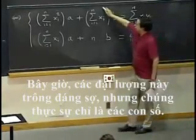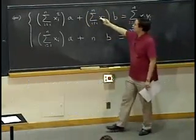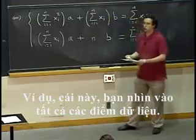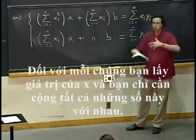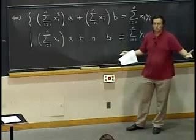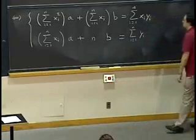Now, these quantities, they look scary, but they are actually just numbers. For example, for this one, you look at all your data points. For each of them, you take the value of x and you just sum all these numbers together.